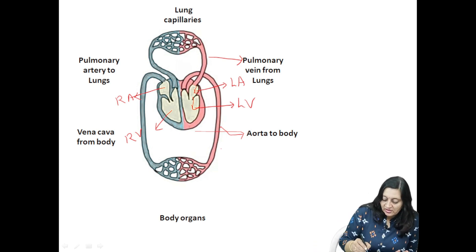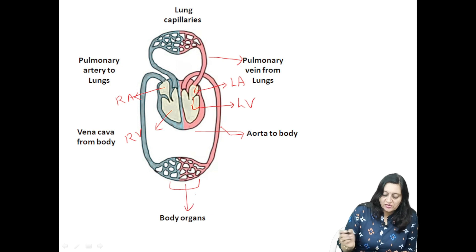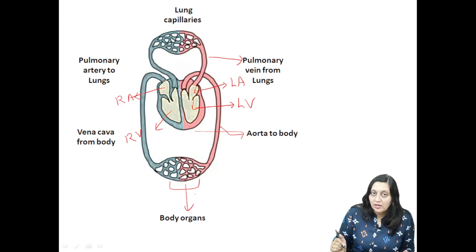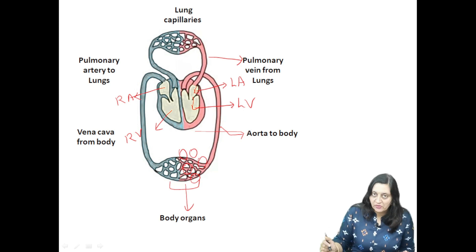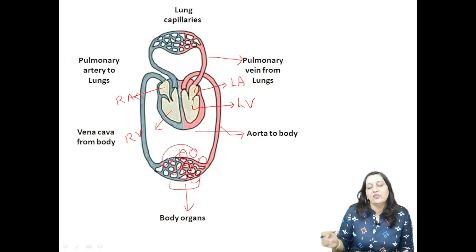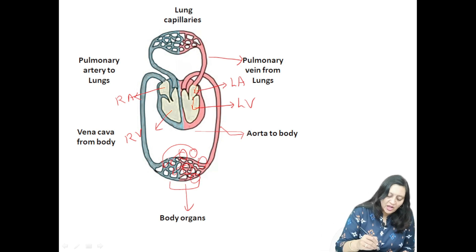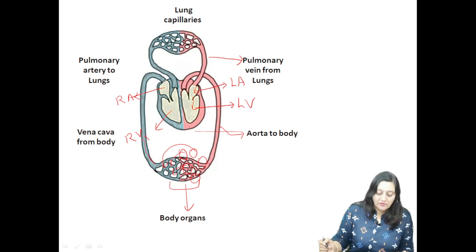We can see that this network of arteries forms blood capillaries in the body organs. These blood capillaries are the actual place where the exchange of nutrients takes place. The nutrients required by the cells are absorbed from this, entering the cells via the process of diffusion, while the metabolic waste generated by these cells again enters the capillaries via diffusion. All these substances now poured into the blood are carried via a network of veins, which later on fuse and form the vena cava.